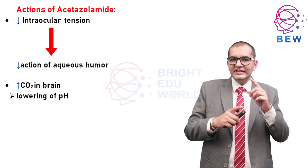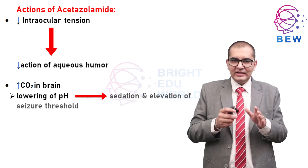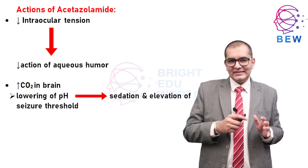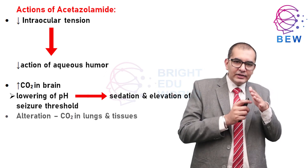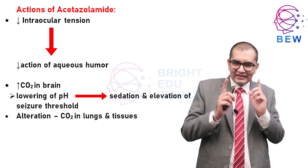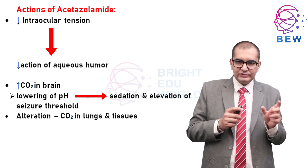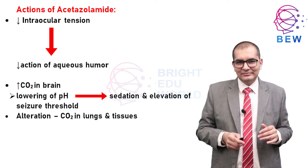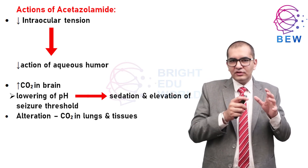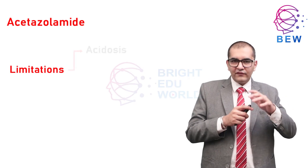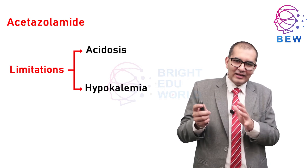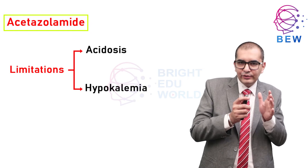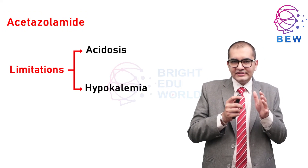The third extra-renal action includes raised CO2 levels in the brain and lowering of pH, which leads to sedation and elevation of seizure threshold. The fourth action is alteration of CO2 transport in lungs and tissues, though these actions are masked by compensatory mechanisms. Because of the self-limiting action, production of acidosis and hypokalemia, acetazolamide is not used as a diuretic.